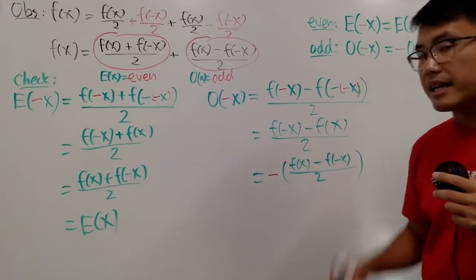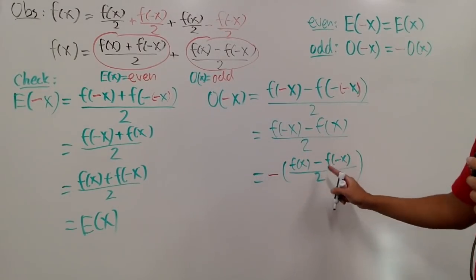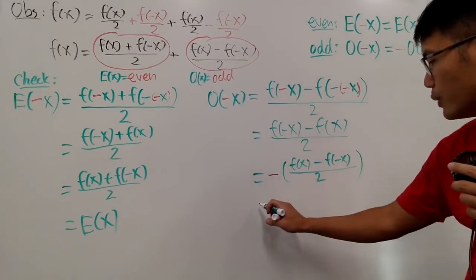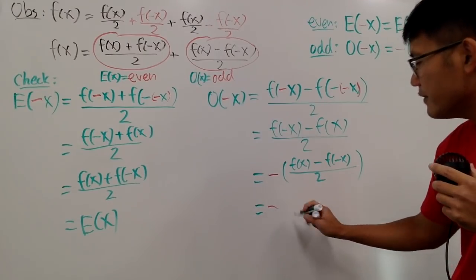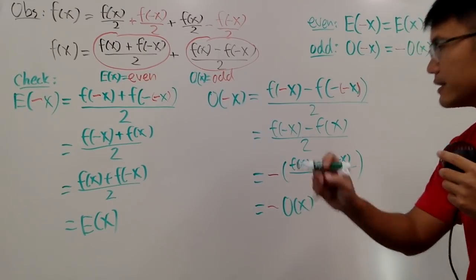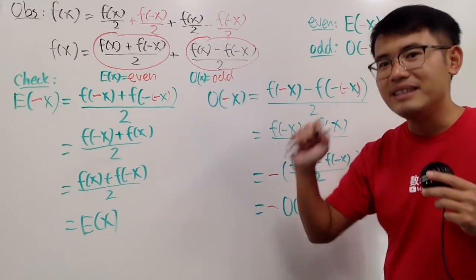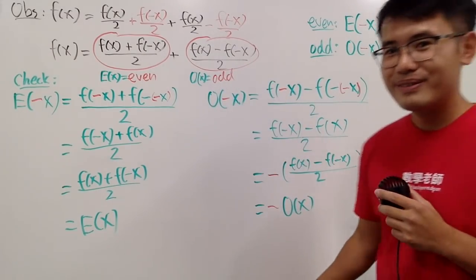Because I factor out a negative. This right here was my original O. So we see that we have negative O of x. Therefore, this part is indeed odd. So that's cool. And now let me show you an example. So let's clean the board.